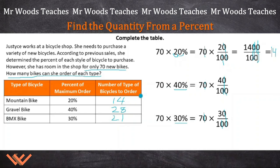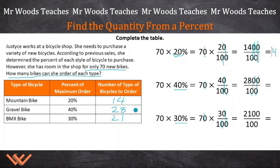How do we double check? Well, we can keep on going with setting up the equation as I did it before. So here we have 70 times 40 is 2,800 divided by 100, and again, we're going to just take that away, take that away, and 28 over 1 is equal to 28. Same thing here — take these zeros away, and 21 over 1 is just equal to 21.